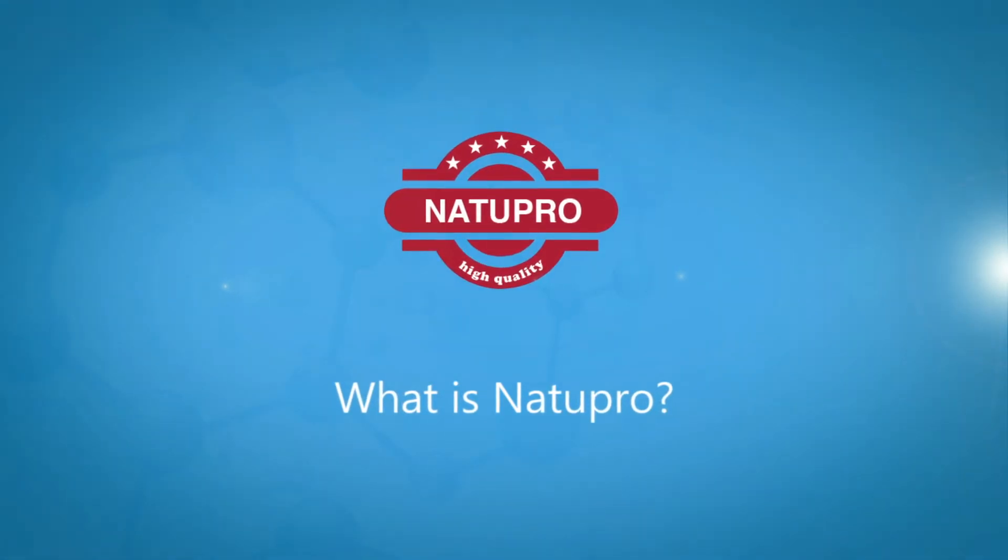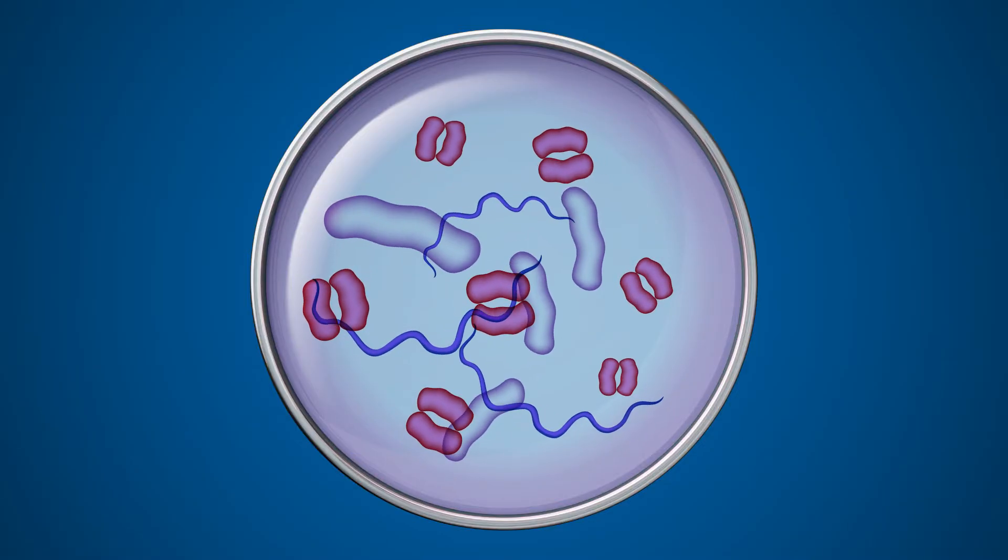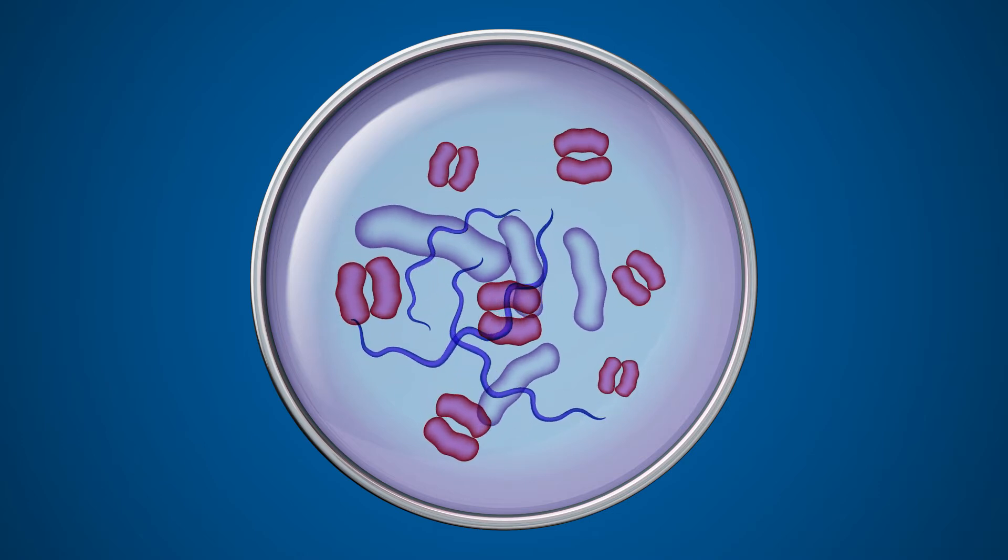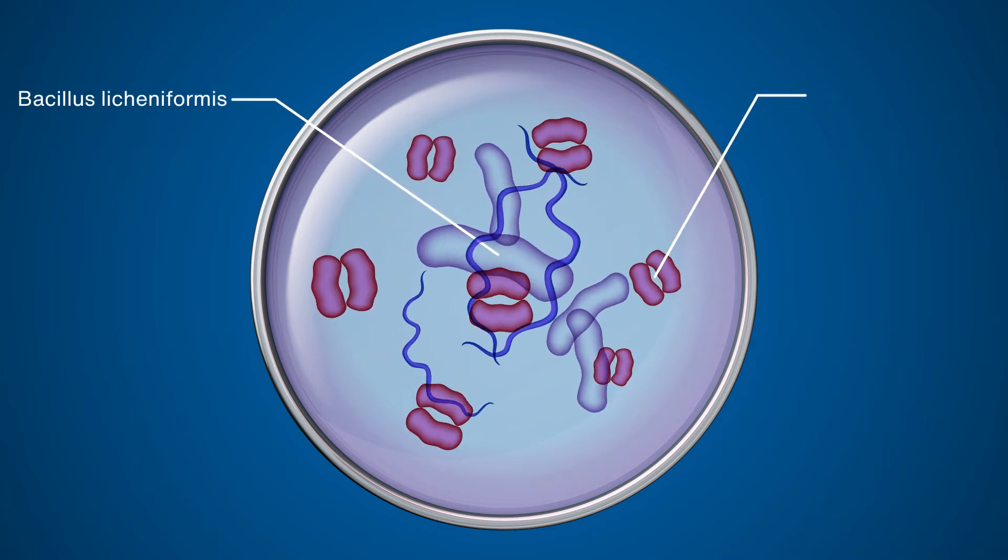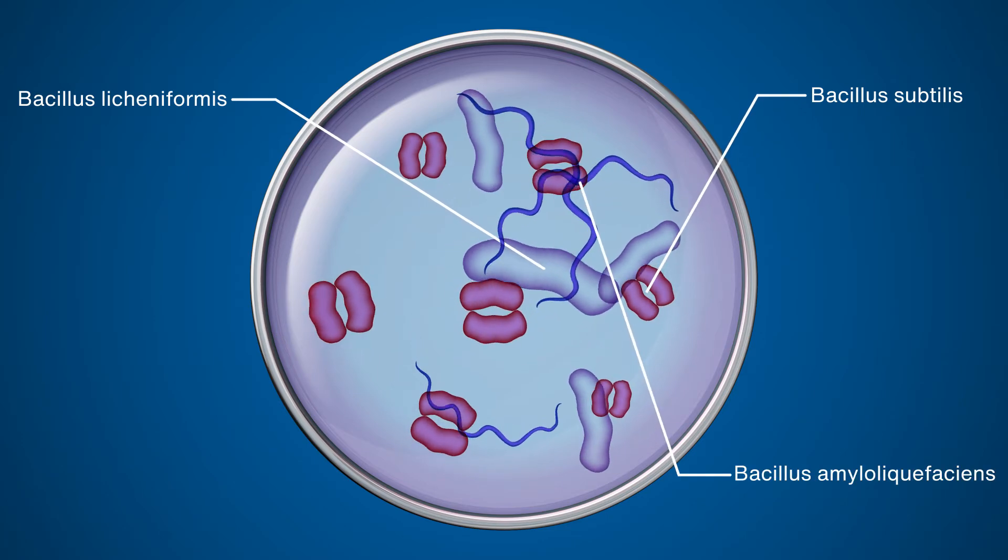What is Natupro? Natupro is a Bacillus probiotic mix that improves gut health and feed efficiency. It contains four Bacillus strains including one Bacillus licheniformis, one Bacillus subtilis, and two Bacillus amyloliquefaciens.